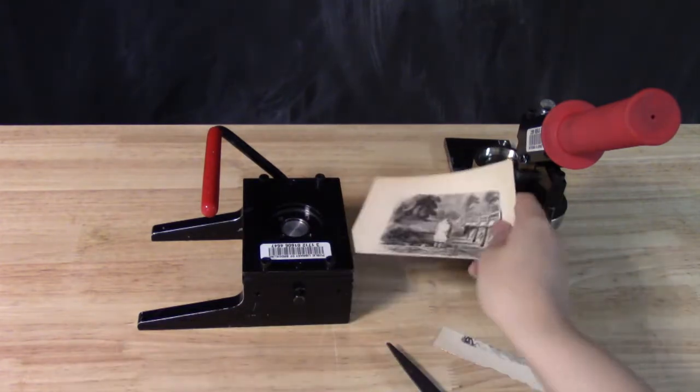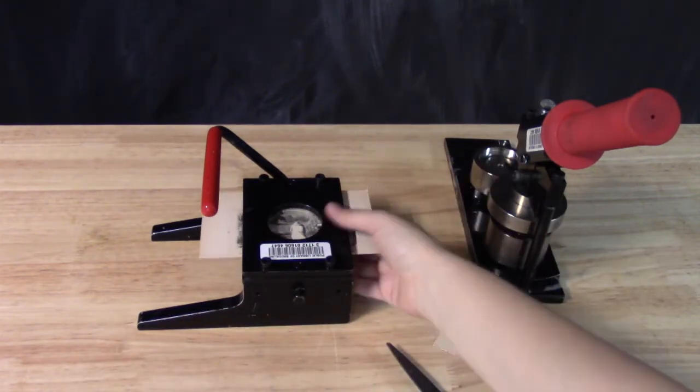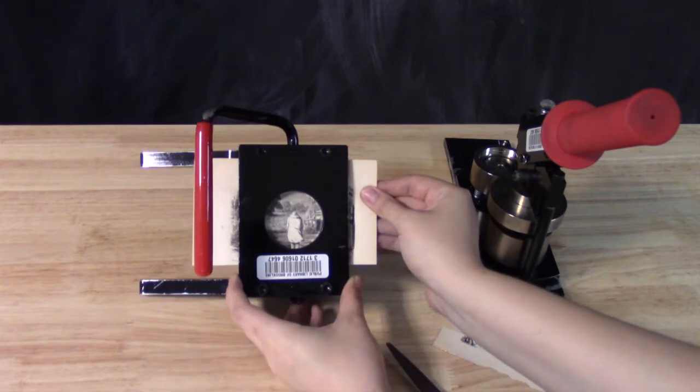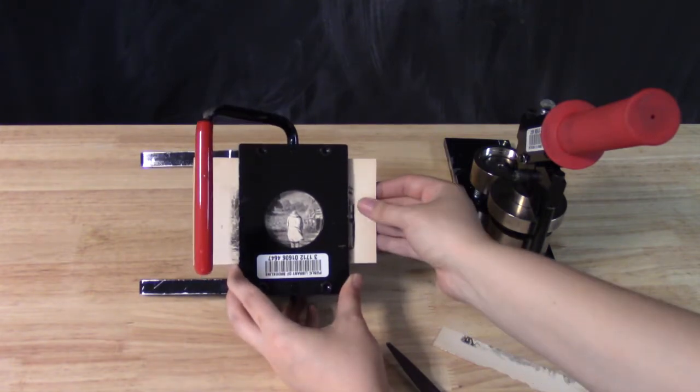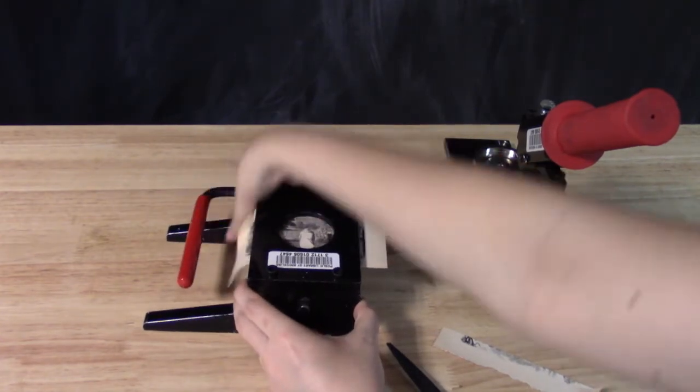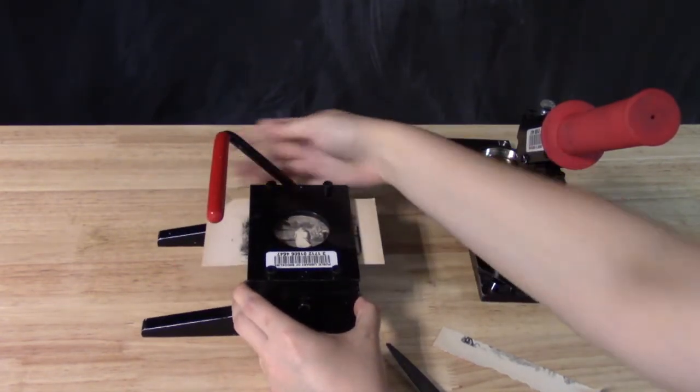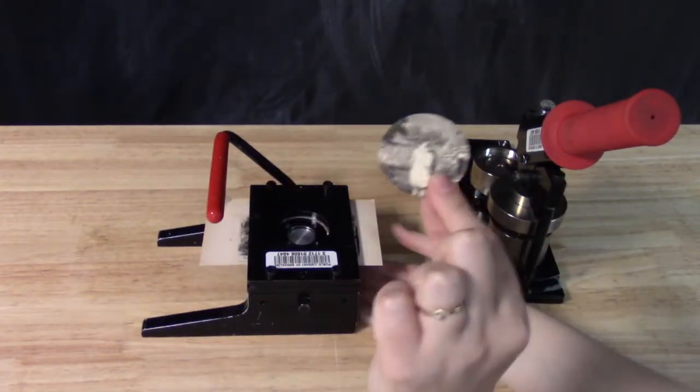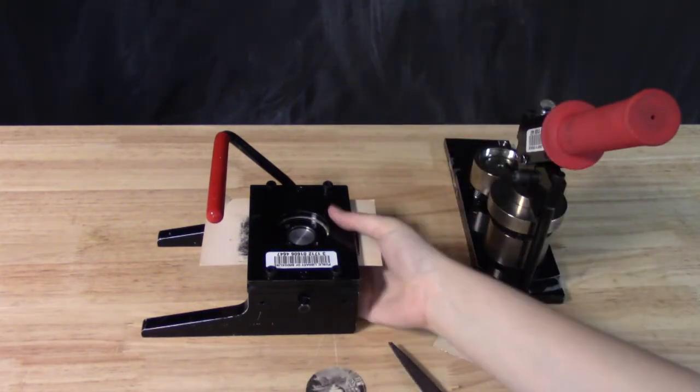The circular window at the top of the punch previews what you'll be cutting out, so be sure to center your design the best you can. When you're happy with how it looks, just push down on the lever to cut a circle, then tap the silver cylinder from the bottom to get the paper out. Be sure to pull the lever back up and remove any leftover paper scraps for the next patron.